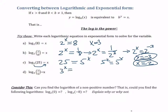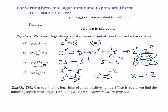How about 3 to the x equals 1/9? We know 1/9 is 1 over 3 squared, which is the same as 3 to the negative 2nd, so x is negative 2. Again, we're asking: what is the power we put on 3 to get 1/9? That power is negative 2.